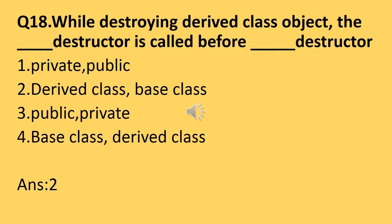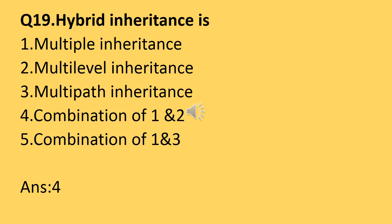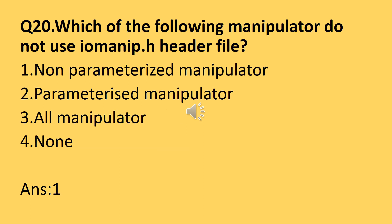Question number nineteen: what is hybrid inheritance? Hybrid inheritance is a combination of multiple inheritance and multi-level inheritance. So the answer is: combination of both (option 4).